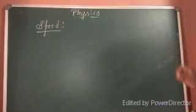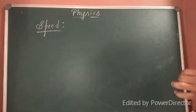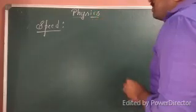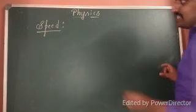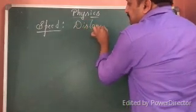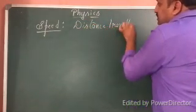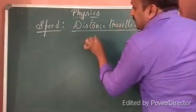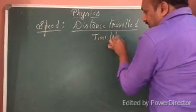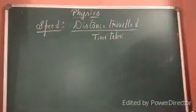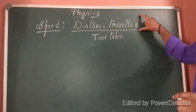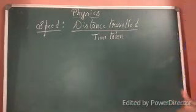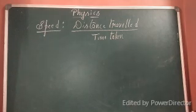Speed is the rate of change of distance travelled with respect to time. That can be represented by distance travelled divided by time taken. This is the formula. Speed is equal to distance travelled divided by time taken.